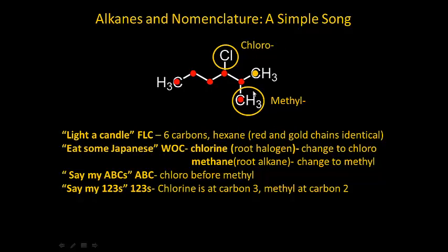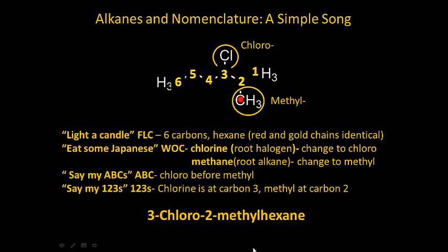Then I say my 1, 2, 3s. I start numbering from this end because it has the closest substituent. So this is 1, 2, 3 - chloro - 1, 2 - methyl - hexane. I number from this end, and I have a substituent at two and a substituent at three. The name of the compound is 3-chloro-2-methylhexane.